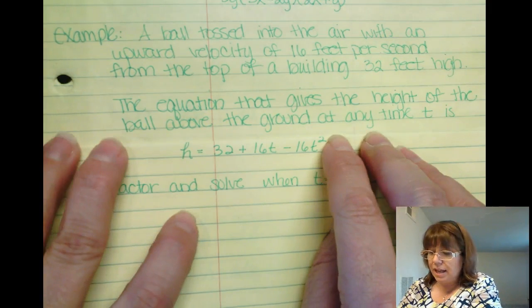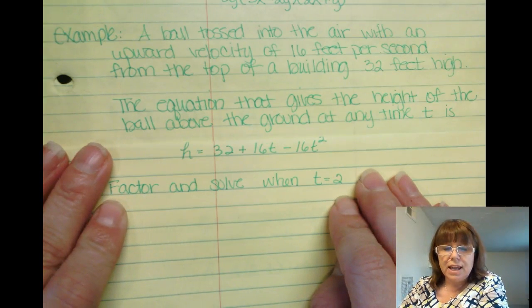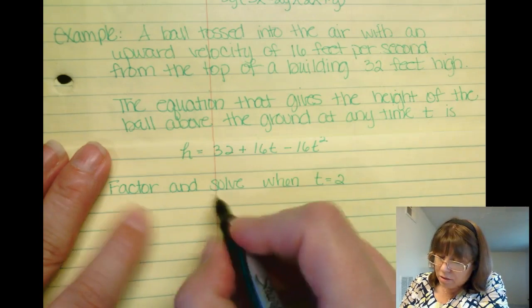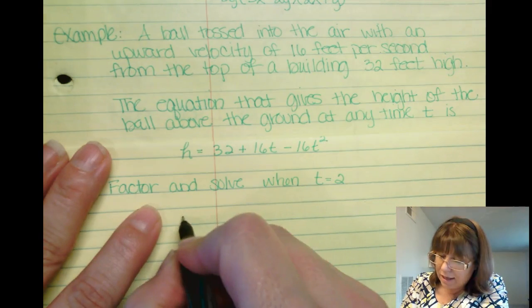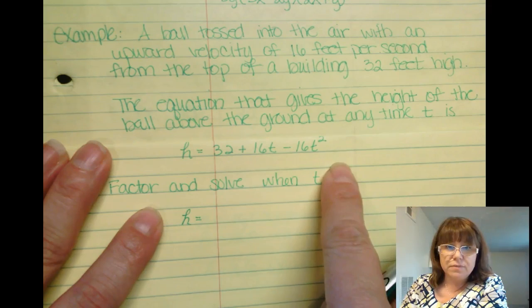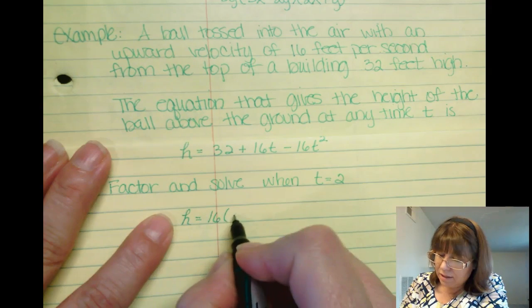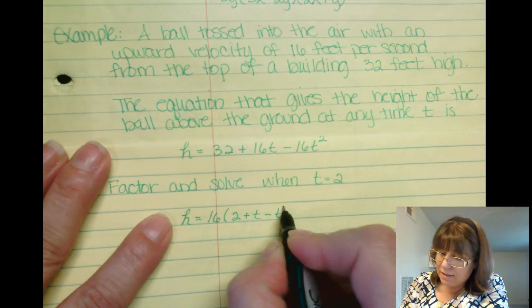So let's factor it and then after we factor it let's plug in a value for t to see what the height of the ball is. So I just want to factor the right hand side. So h will equal, what is my greatest common factor? Looks like a 16 can come out of there leaving me 2 plus t minus t squared.